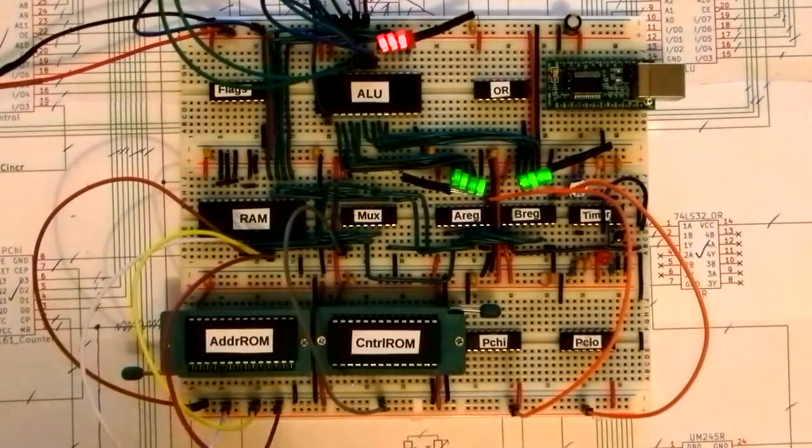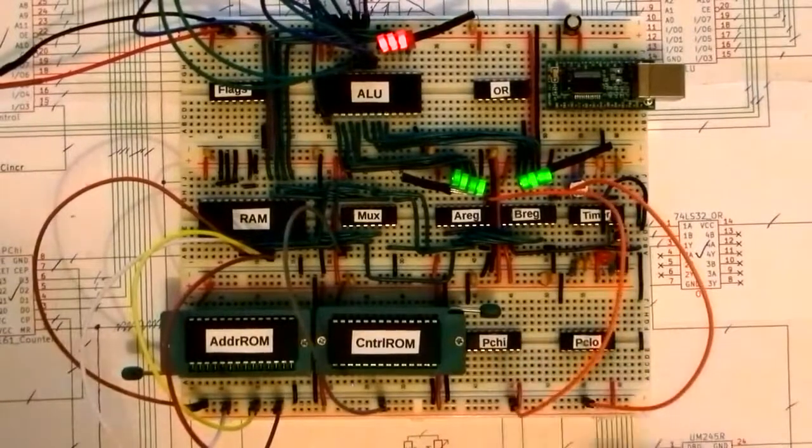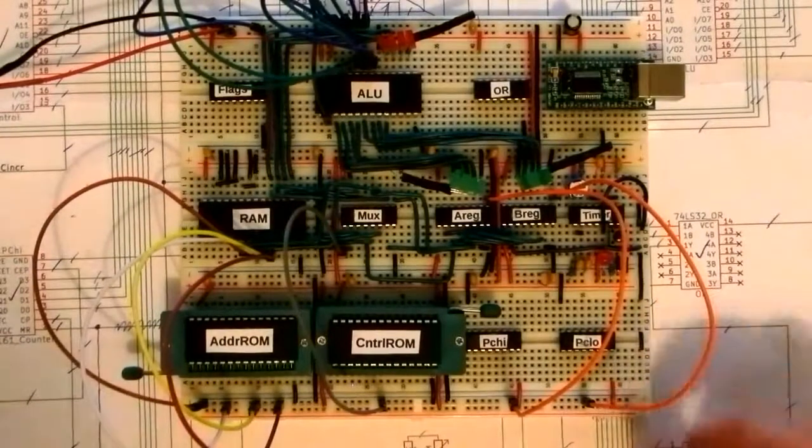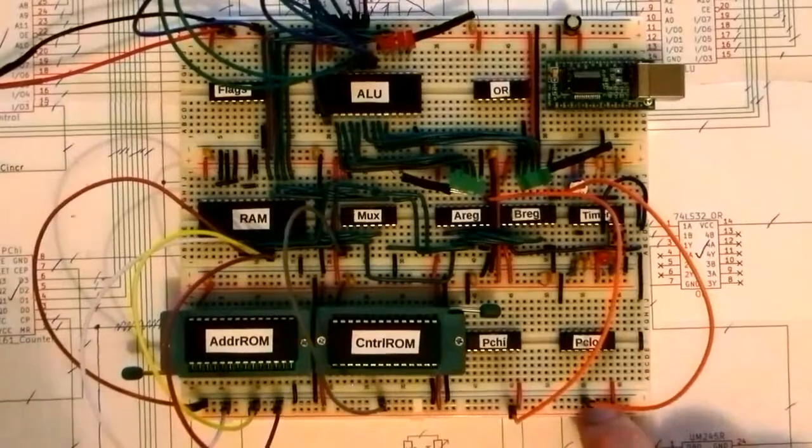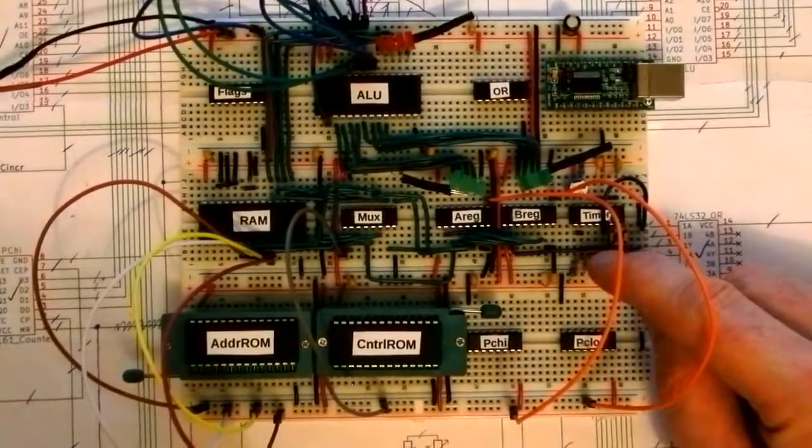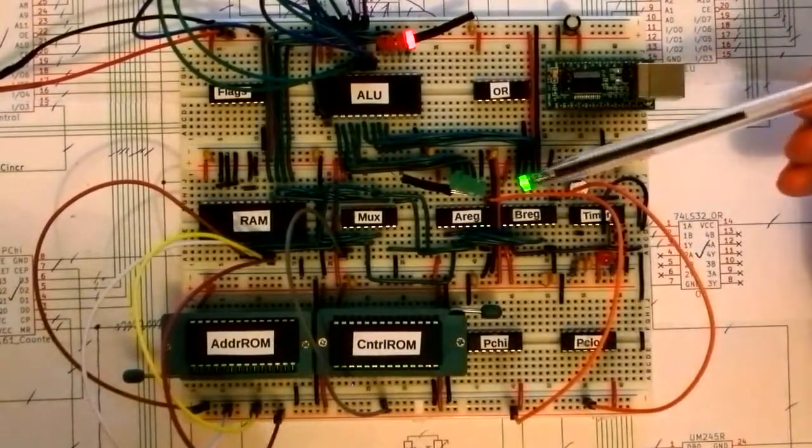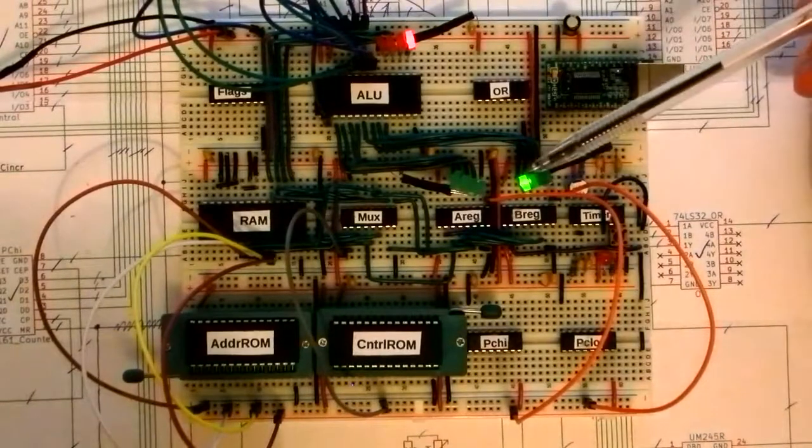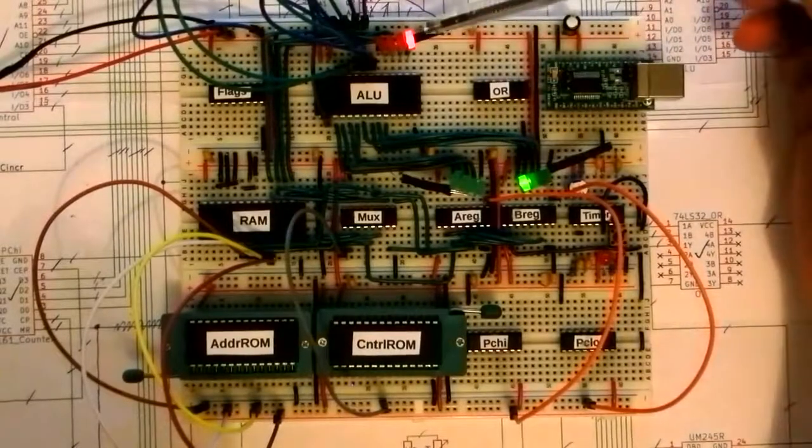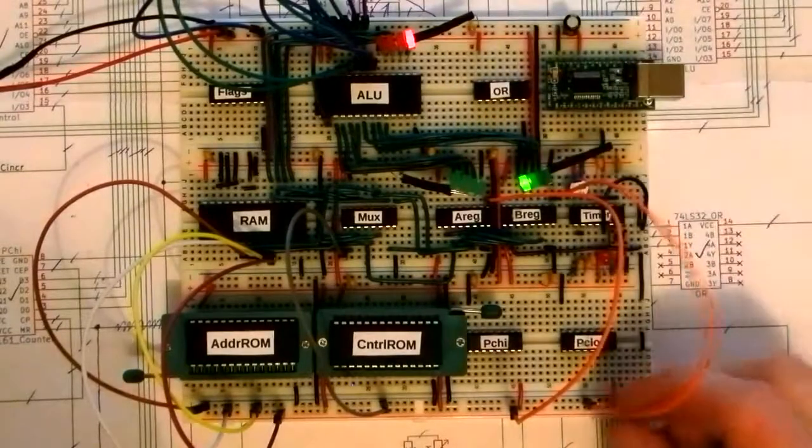Right now both registers have got pretty much rubbish in them, so let's quickly both load them up with zero. I'm going to set a constant zero and I'm going to load both of them at the same time with zero. Alright. I'm just going to quickly leave B loading and I'm going to set it to be the number one.